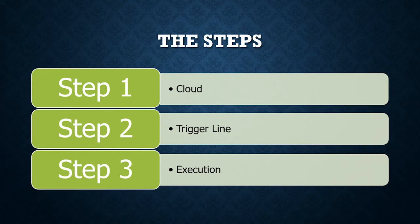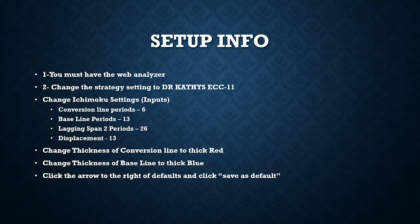Step number one is all about the cloud. Step number two is the trigger line, which has everything to do with our conversion versus baseline. Step number three is our execution. The goal of this training is to go through this slideshow, have you get this information down on a notepad, and then we will head over to the charts and actually go through the process. If something doesn't make sense here, I'll be showing you everything on the charts in the next 20 minutes.